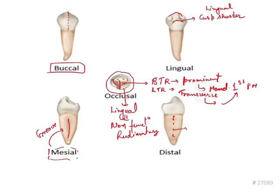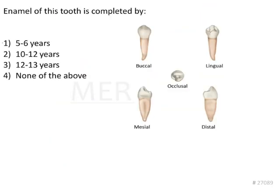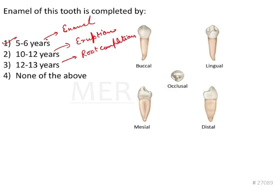The root is further completed in another 2 to 3 years, that is 12 to 13 years of age. Going back to the question — the enamel of this tooth, which is the mandibular first premolar, is completed by 5 to 6 years of age. So according to chronology: enamel formation at 5 to 6 years, eruption at 10 to 12 years, and root completion at 12 to 13 years. The answer is 5 to 6 years.